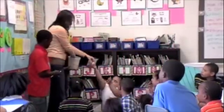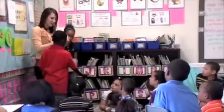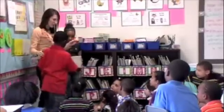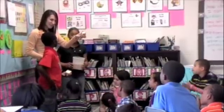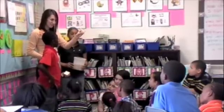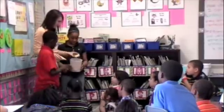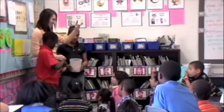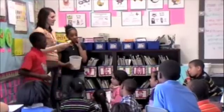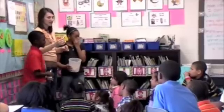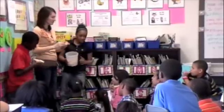What is it? A cone. Vertices? One. Edges? None. Faces? One. What is it? A rectangular prism. Faces? Six. Vertices? Eight. And edges? Twelve.